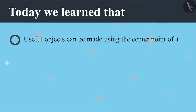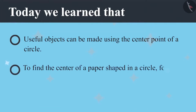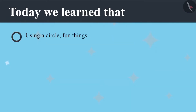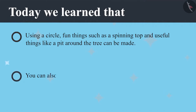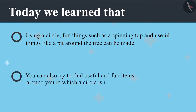Today we learned that useful objects can be made using the center point of a circle. To find the center of a circle shaped paper, it has to be folded in half and then half again. A circle can be used to make fun things such as a spinning top and useful things like a pit around a tree. You can also try to find useful and fun items around you where a circle has been used.